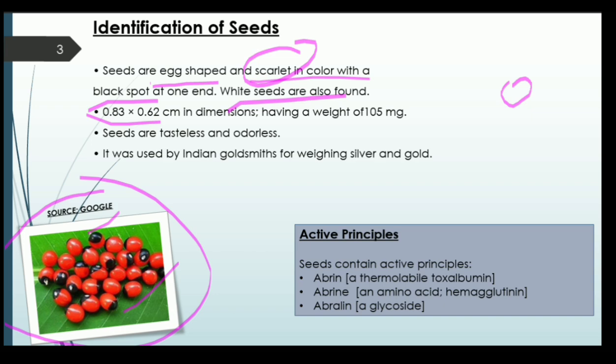The dimensions of the seed vary between 0.83 x 0.62 cm, and its weight is 105 milligrams. The seeds are odorless — they have no smell of their own — and are tasteless as well. They are used by goldsmiths, who are professionals concerned with manufacturing ornaments from gold and silver, for weighing gold and silver products.